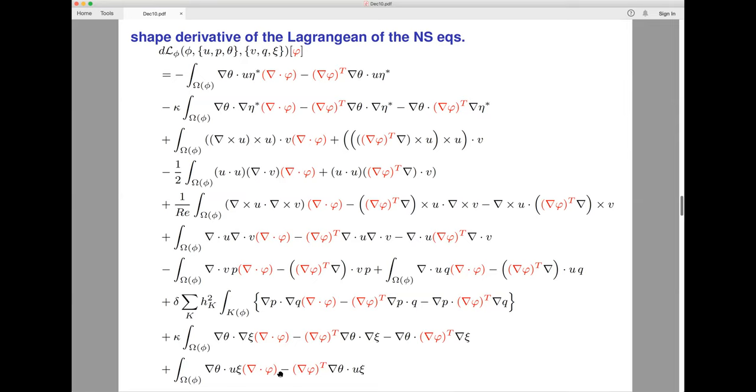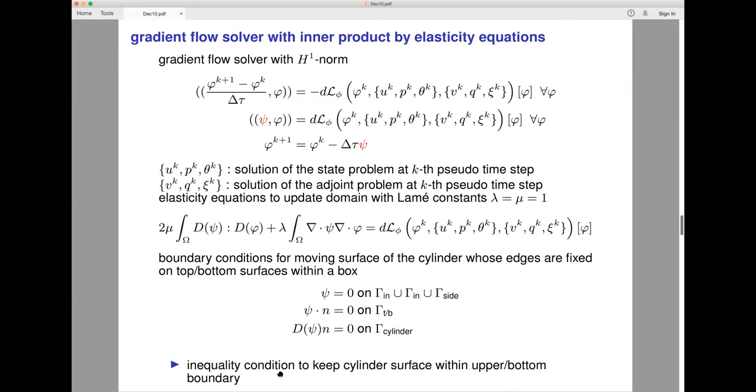Now I will use a very simple algorithm to find the descent direction by gradient flow solver. The direction is determined by a kind of H^1 norm, which is actually realized by elastic equations with prescribed deformation of the domain.